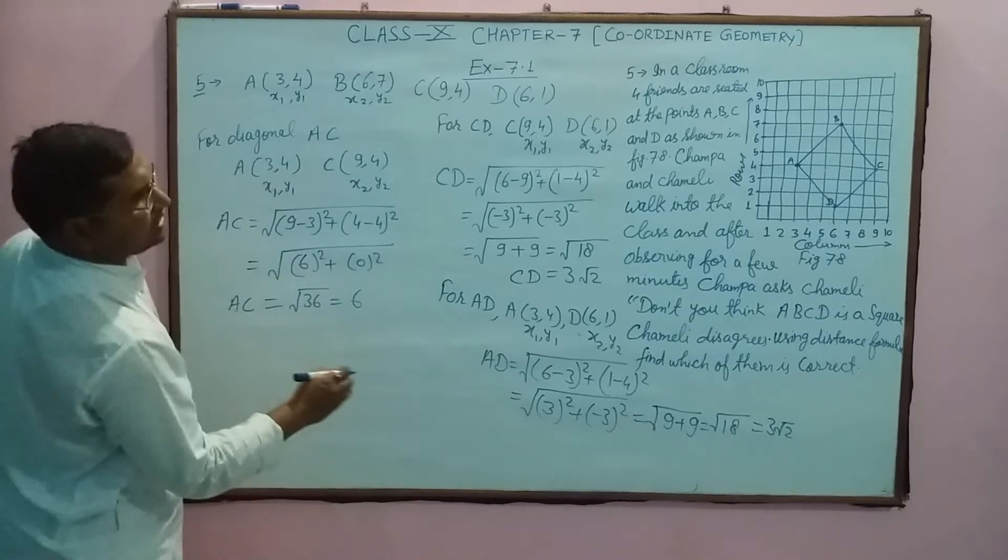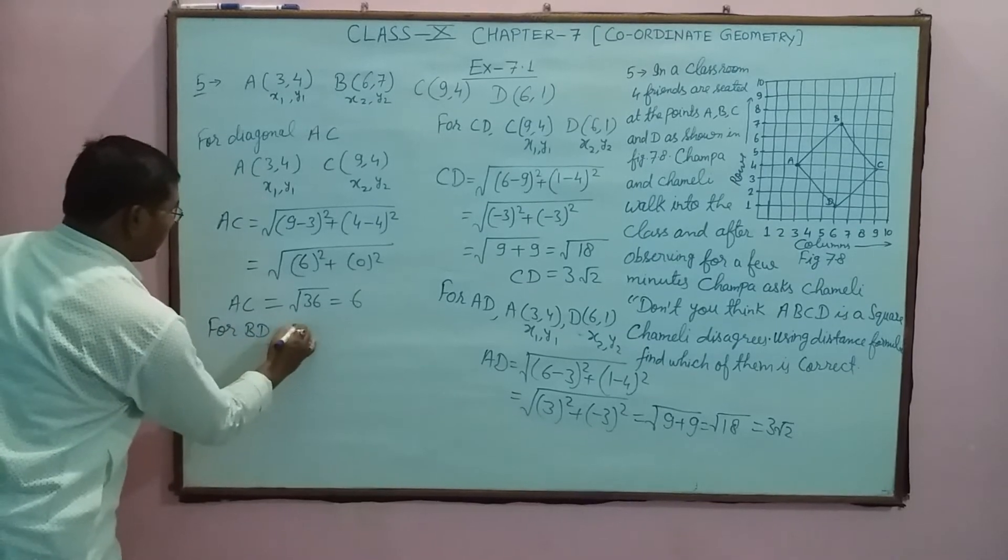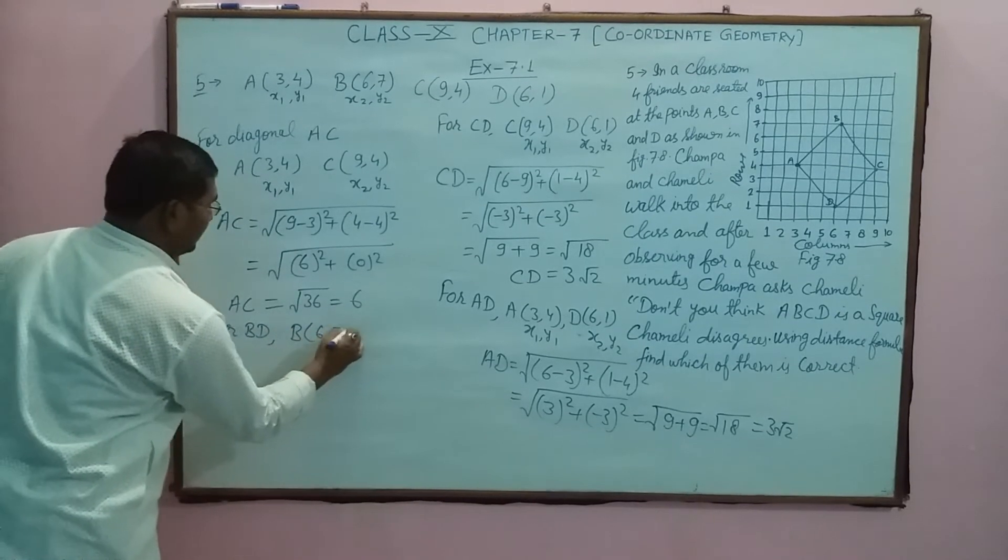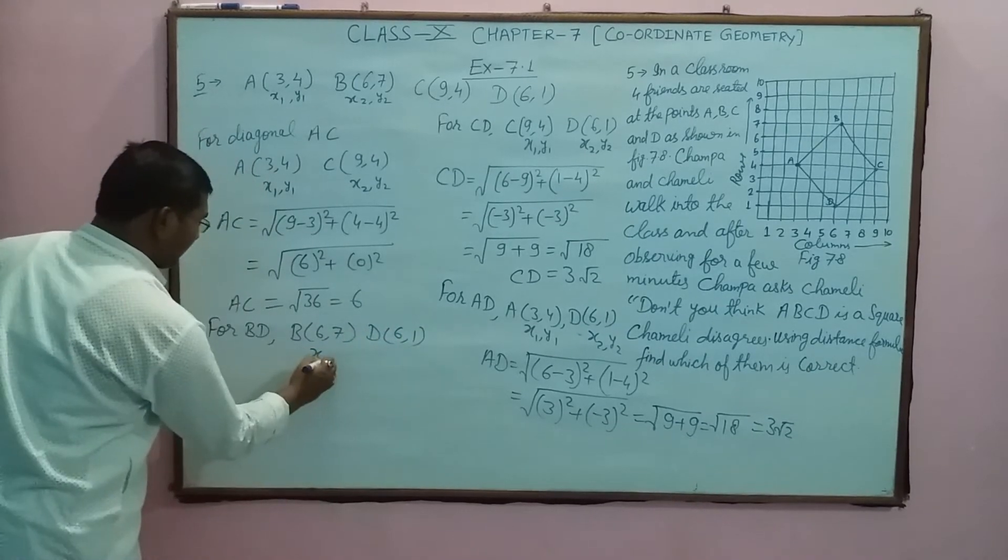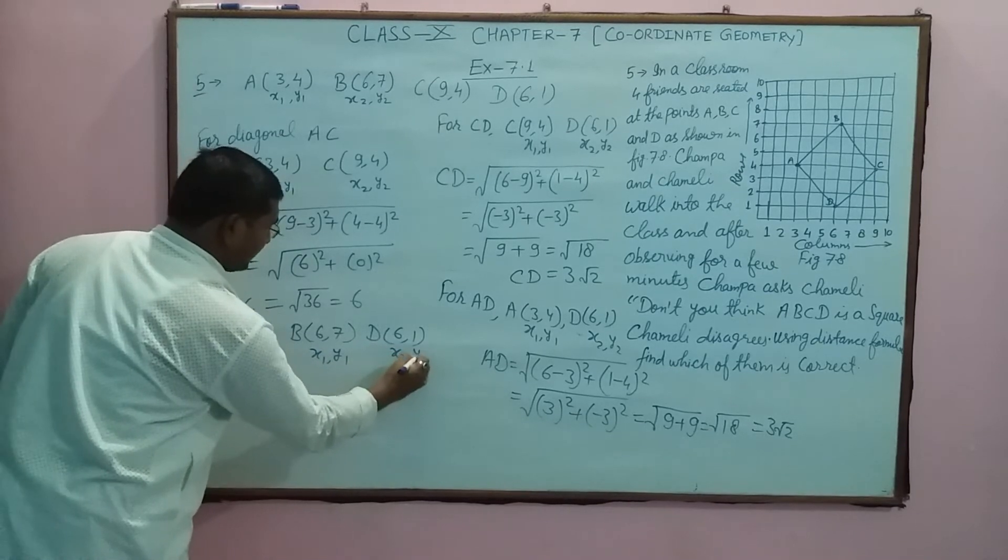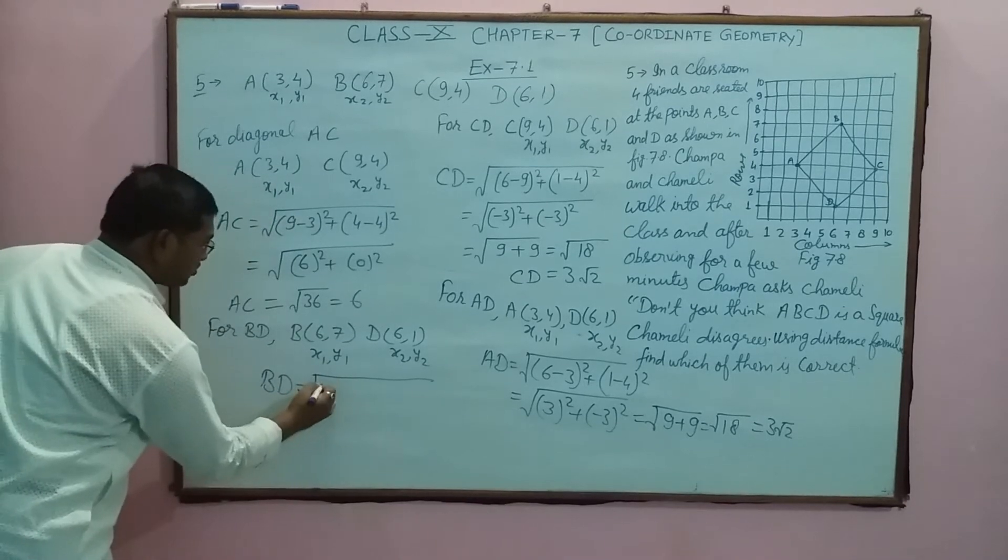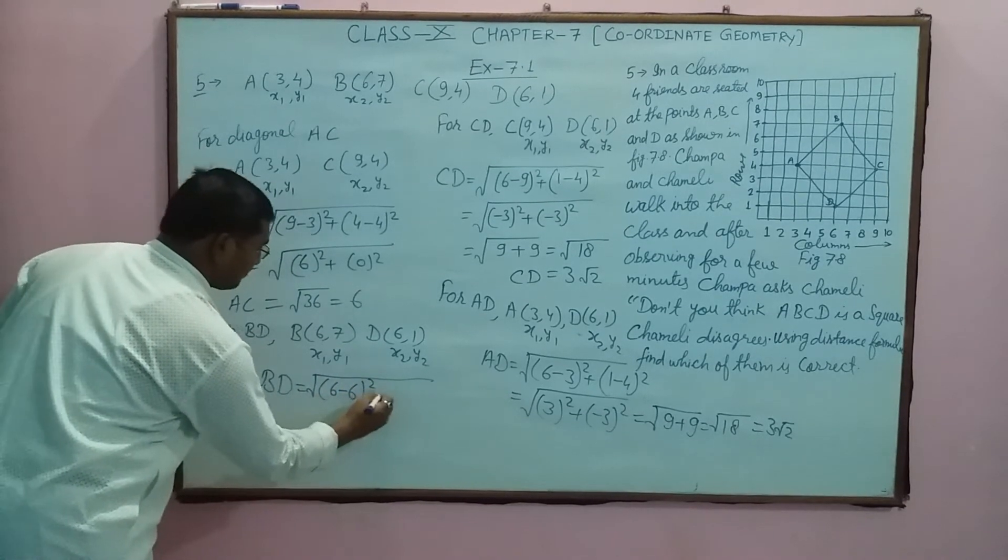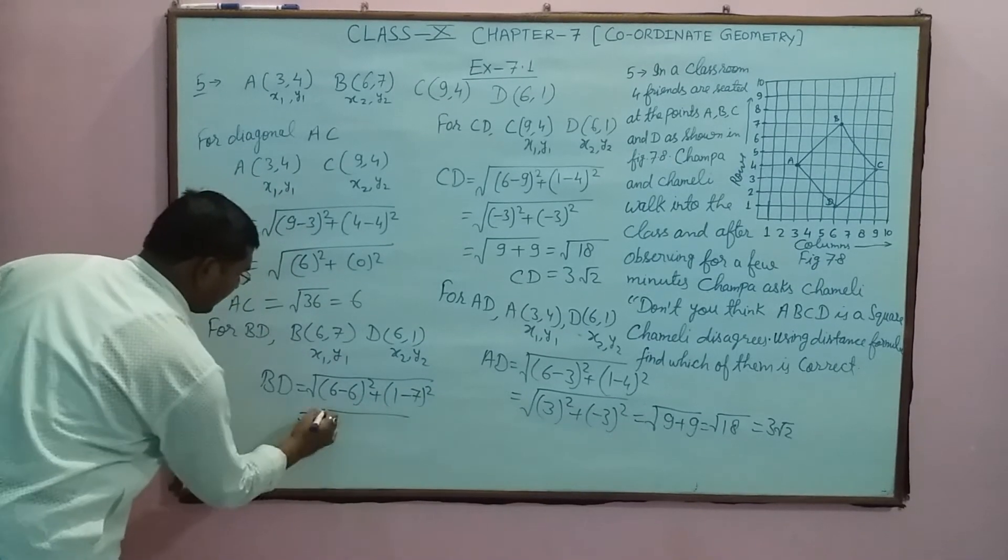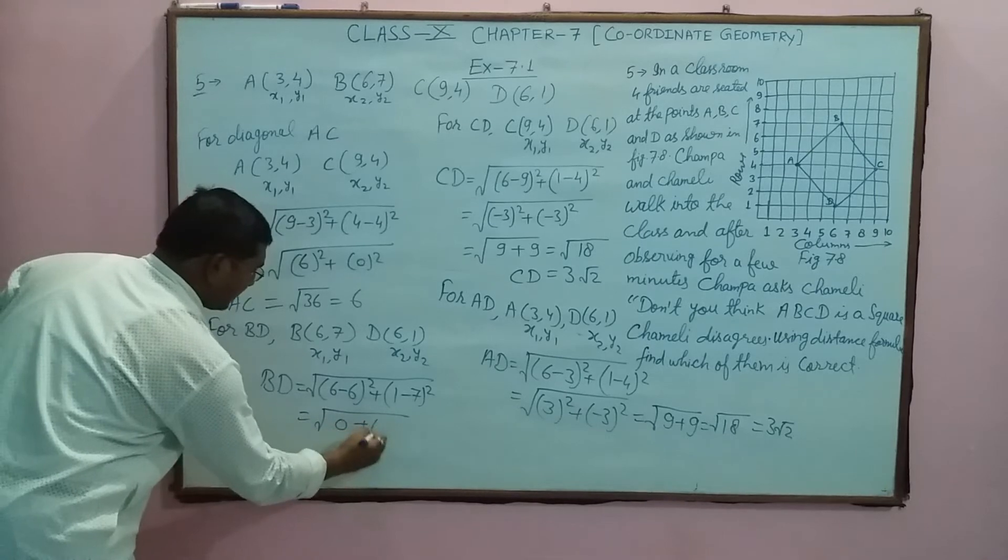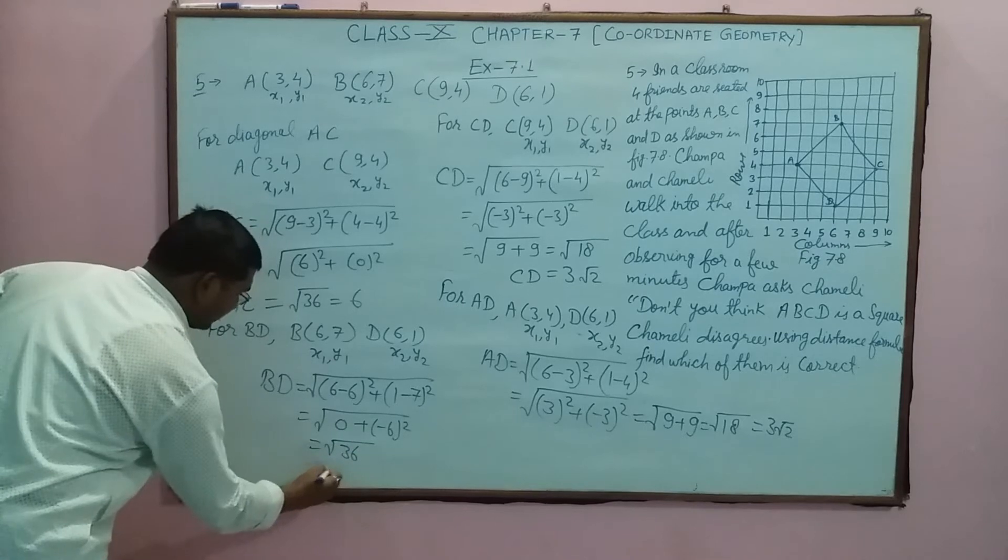Now find diagonal BD. B's coordinate is (6,7) and D's coordinate is (6,1). This is x1, y1 and x2, y2. Now BD equals square root: x2 minus x1 is 6 minus 6 whole square, plus y2 is 1 minus 7 whole square. So it becomes square root: this is 0 plus minus 6 squared, square root 36, that is 6.